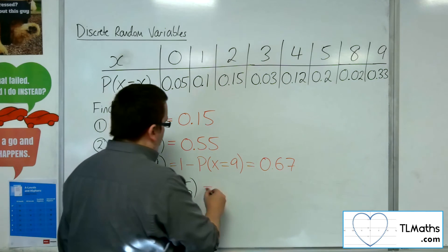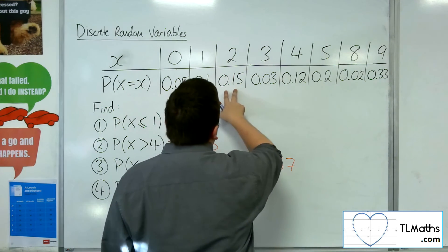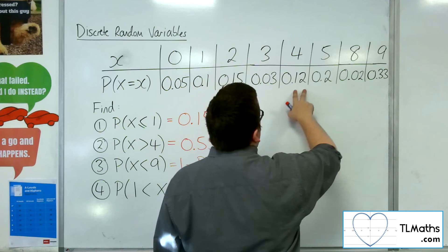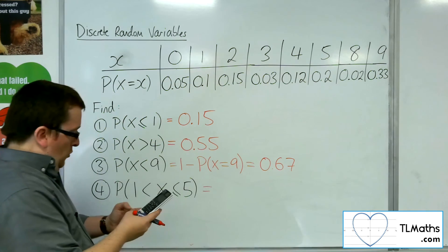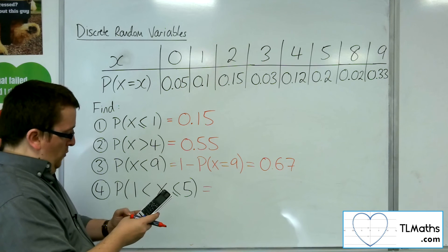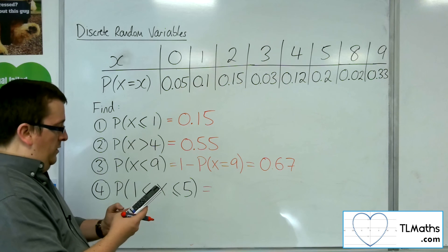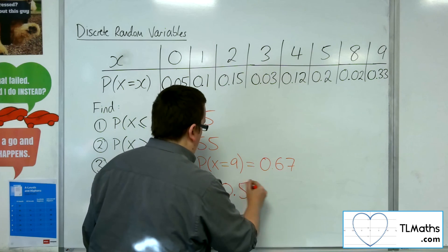So we're going to have greater than 1, so 0.15, 0.03, 0.12, and less than or equal to 5, so 0.2 as well. So we've got 0.15 plus the 0.03 plus 0.12 plus the 0.2, and that gets us 0.5.